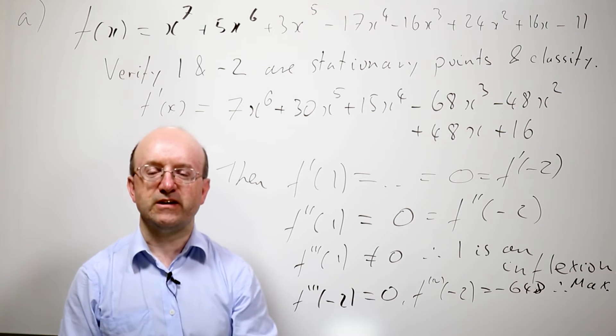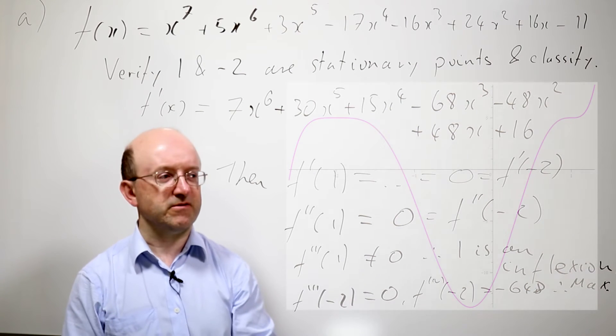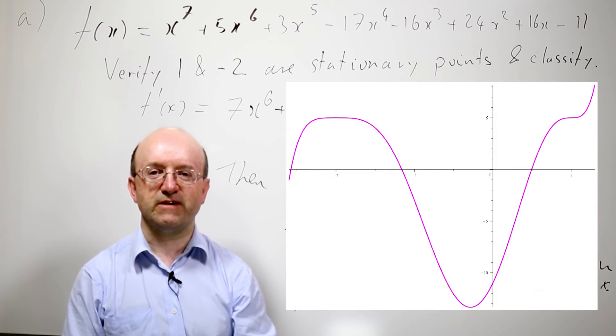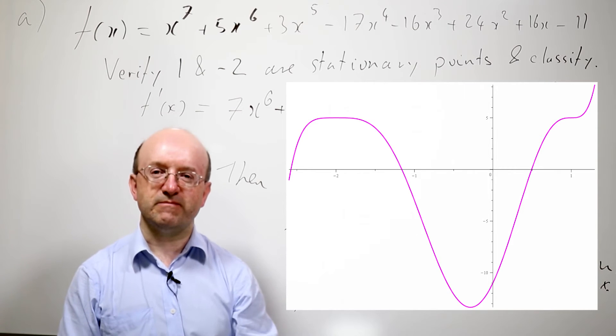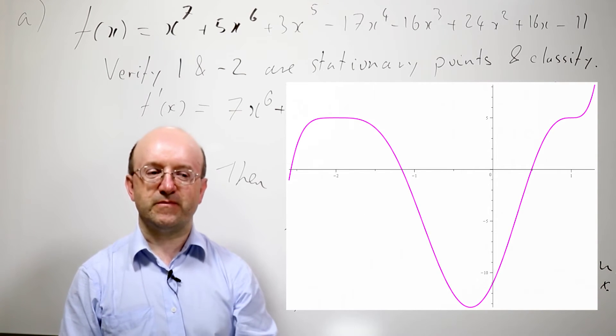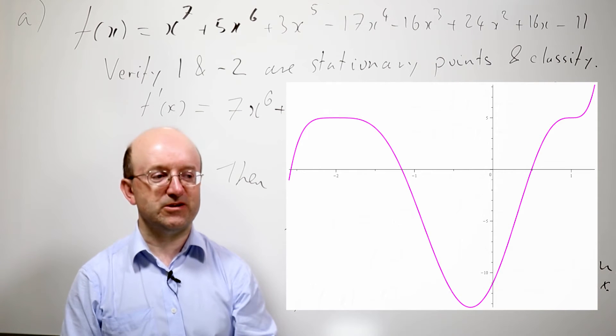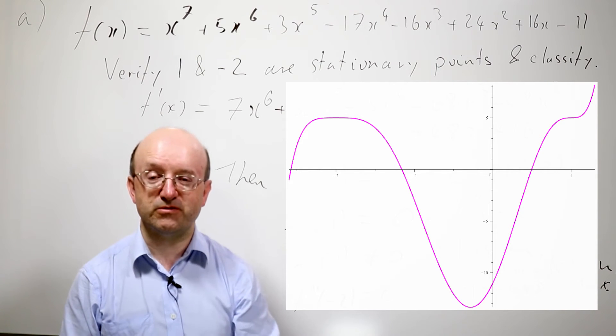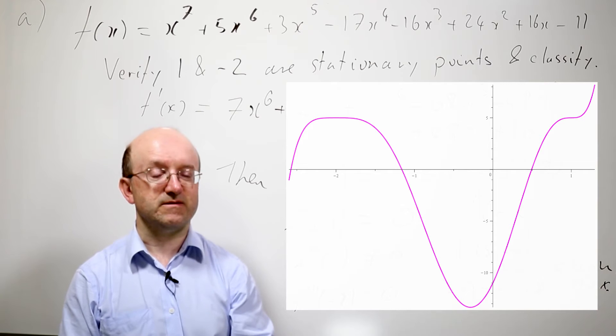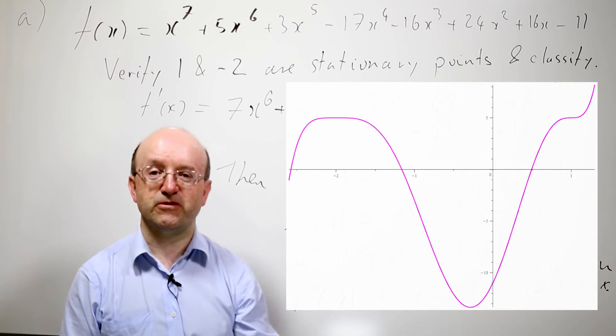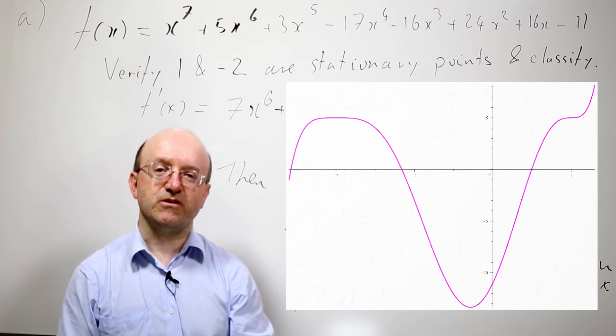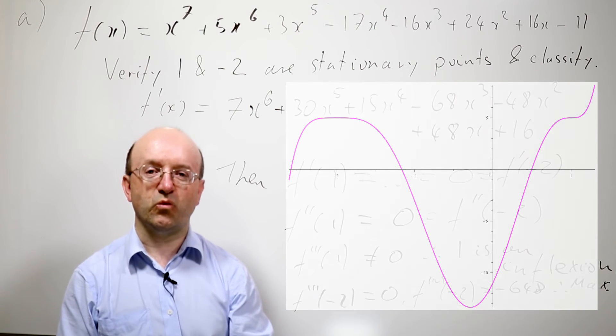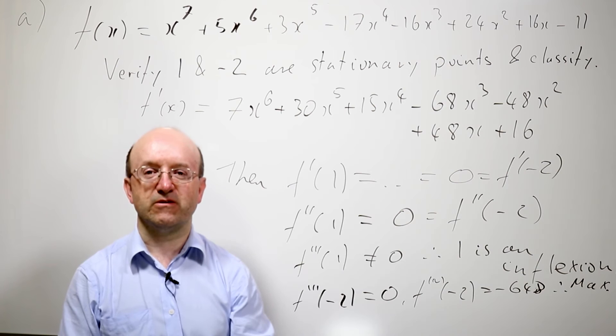So we have an inflection point at 1 and a maximum at minus 2. We can now go on to actually graph the function. It's always a good idea to graph the function. Get Maple or whatever program you happen to want to do to graph the function. And as you look at the graph, you can see there's a maximum at minus 2. But it looks very flat there. It's a very flat maximum in a sense, because we've had to go up to the fourth derivative to find the actual value, because the first three derivative is 0 there. But it's still clearly a maximum. And we've got an inflection point at 1, which again, you can see quite easily on the graph.